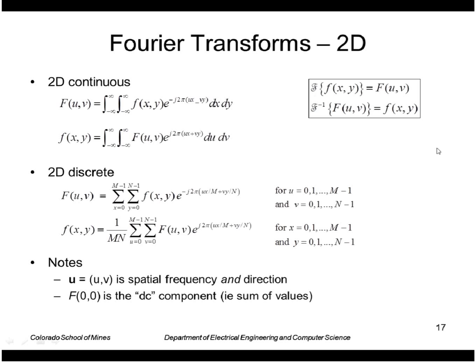Okay, let's look at two dimensions now, Fourier transforms in two dimensions. The continuous version, basically we just integrate over x and y instead of just x, otherwise it's identical.